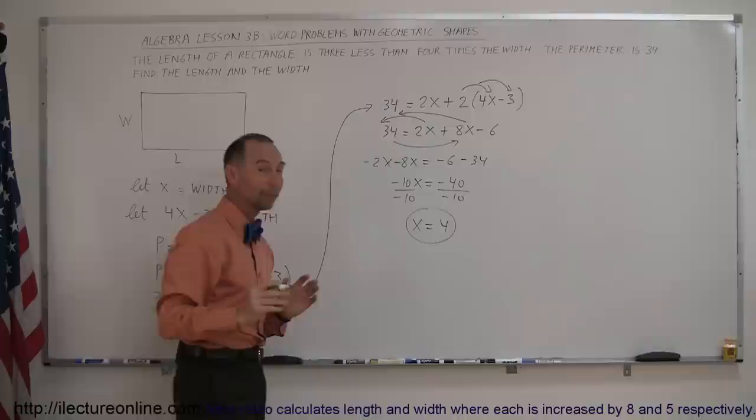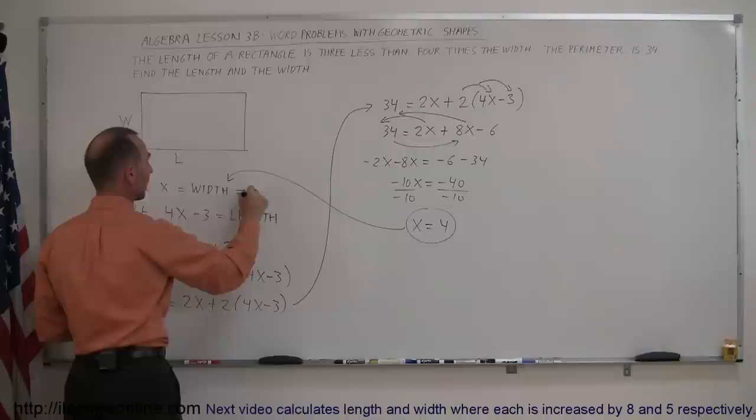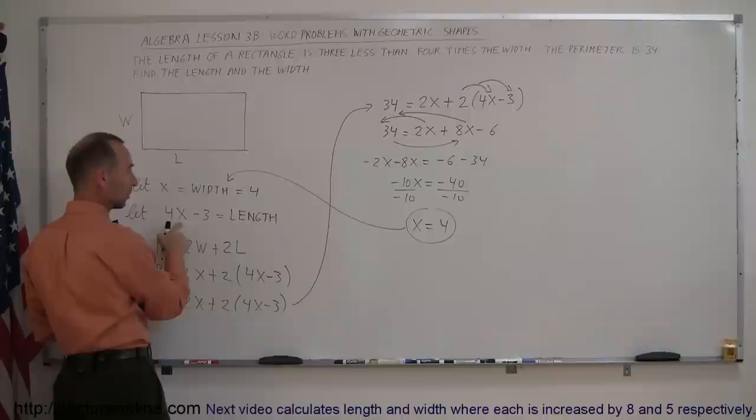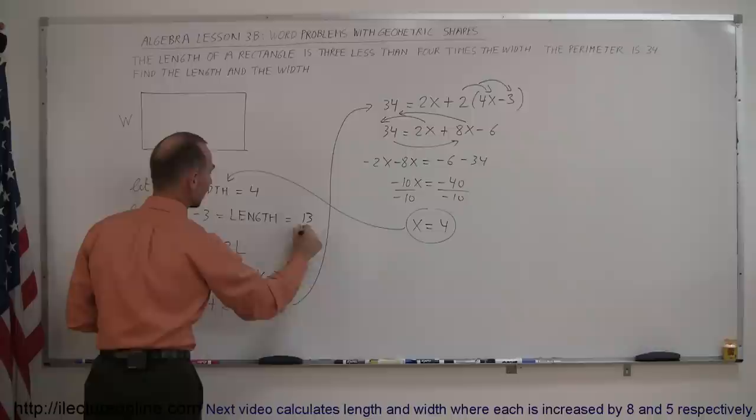Going back to see what that means. We defined the width as x, so we know that the width now is 4, and then the length is 4 times that minus 3. Well, 4 times 4, that's 16 minus 3, which is therefore 13. And there are the two answers. The width is 4, and the length is 13. That's how you do that.